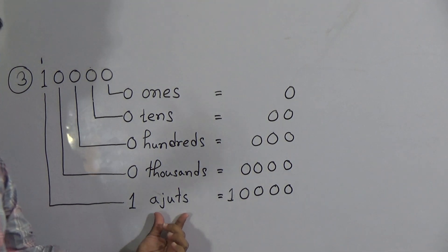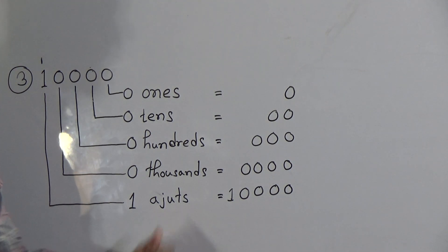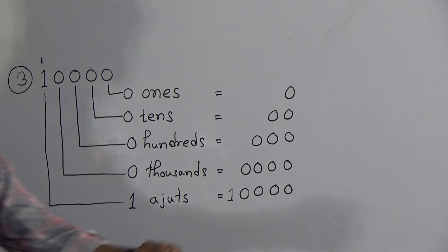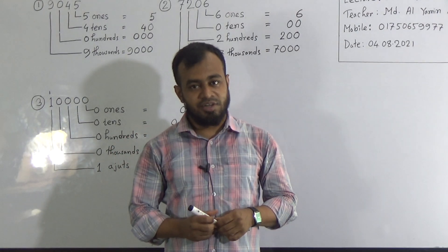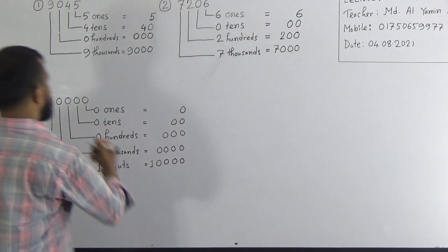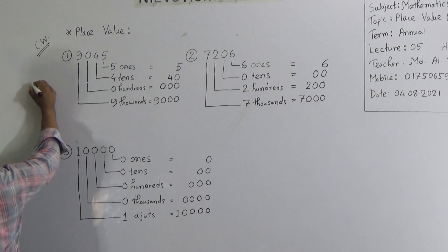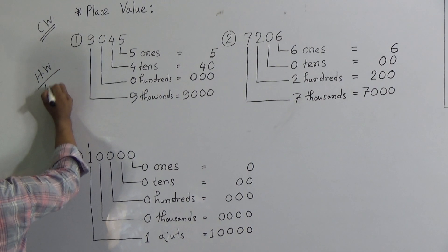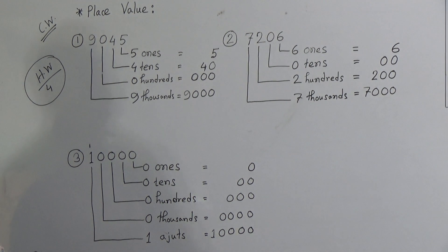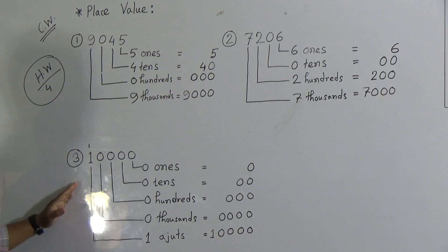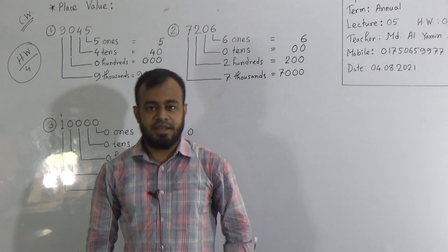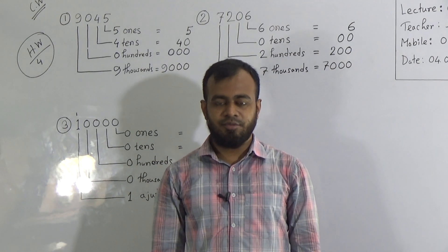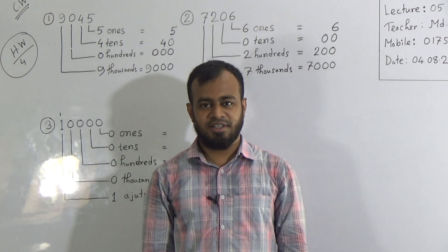This new place name is 'ojuts' — be careful not to make a spelling mistake. Your homework number four is to complete problem three in your homework copy. Also, this classwork is both CW and HW number four. Submit your homework every Saturday from 9 a.m. to 3 p.m. See you again in the next class. Inshallah, Allah Hafiz.